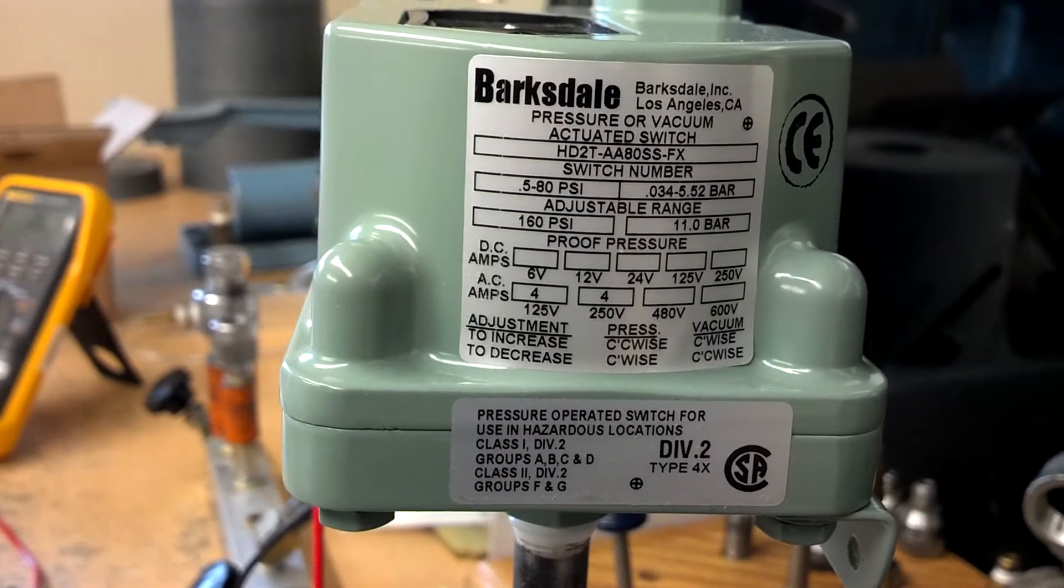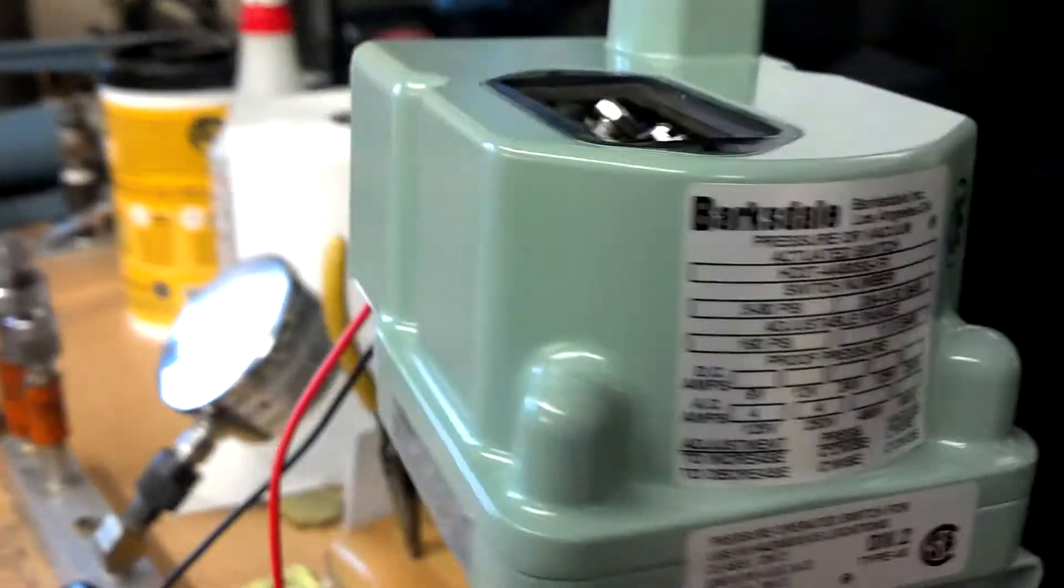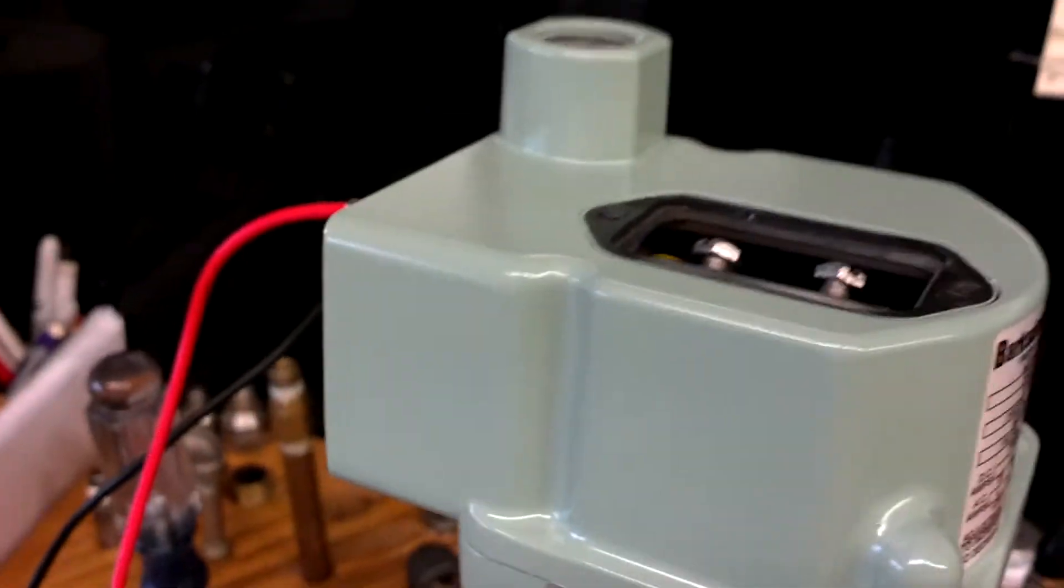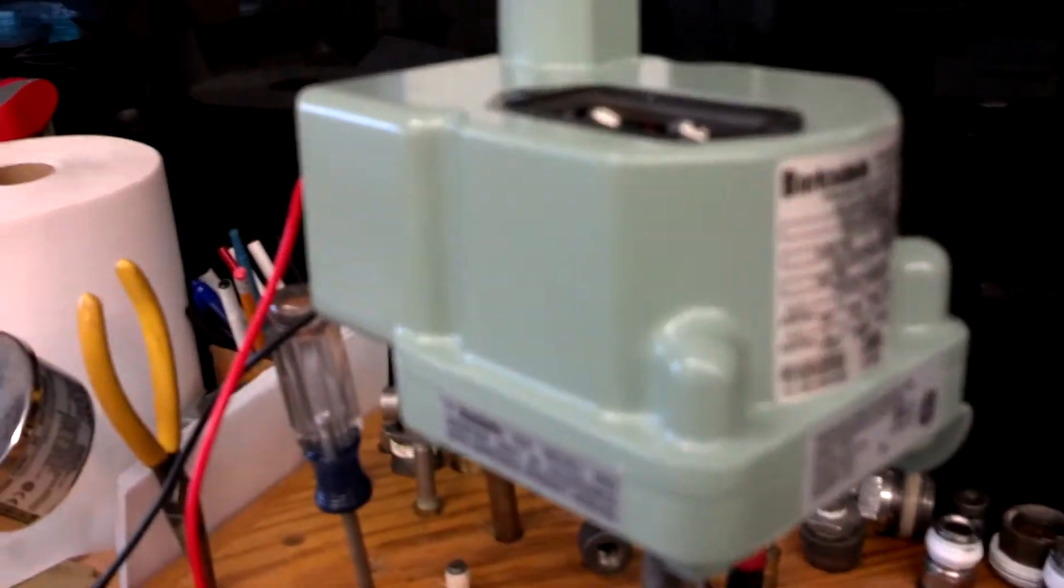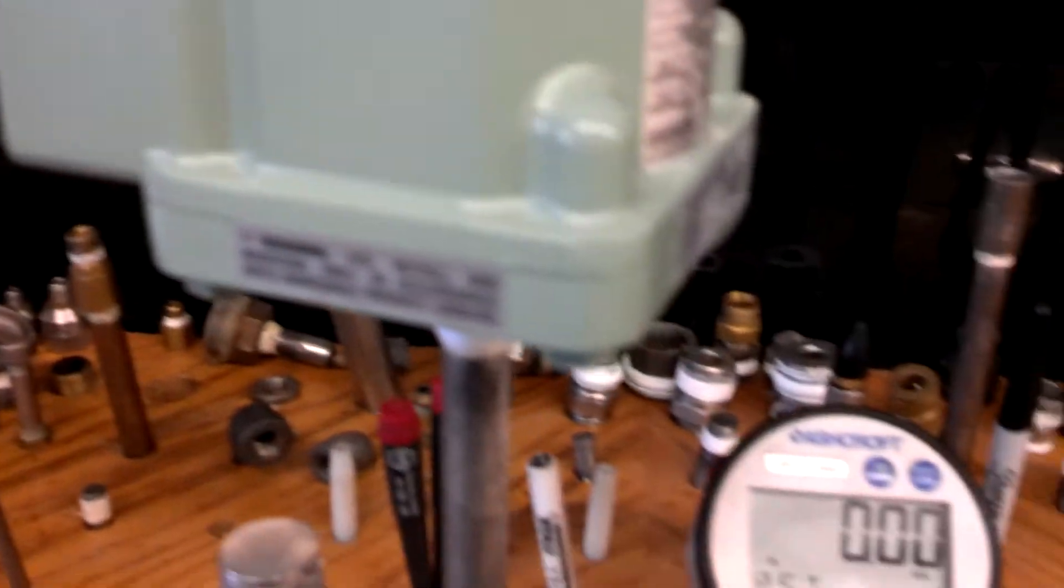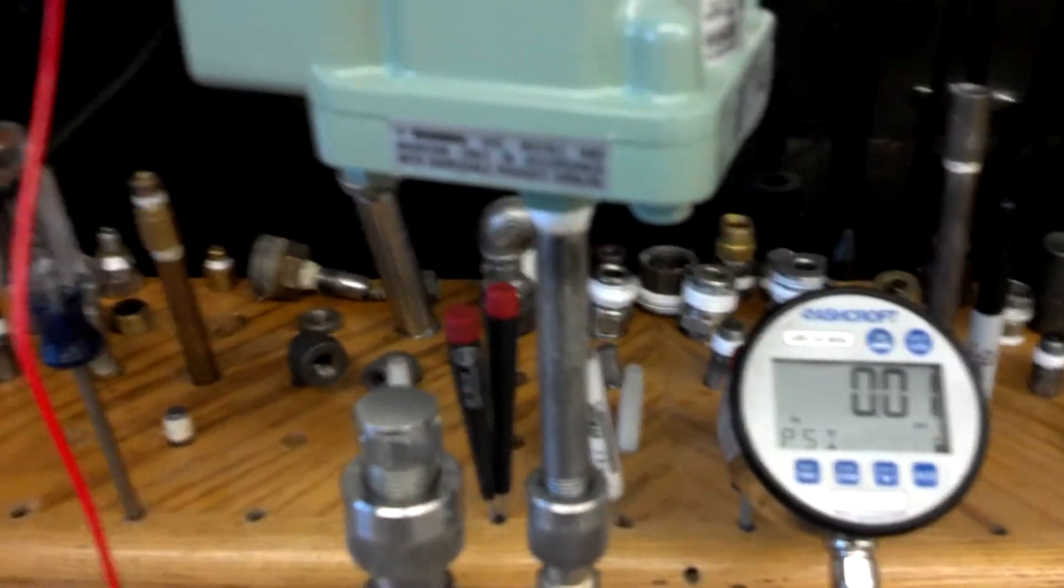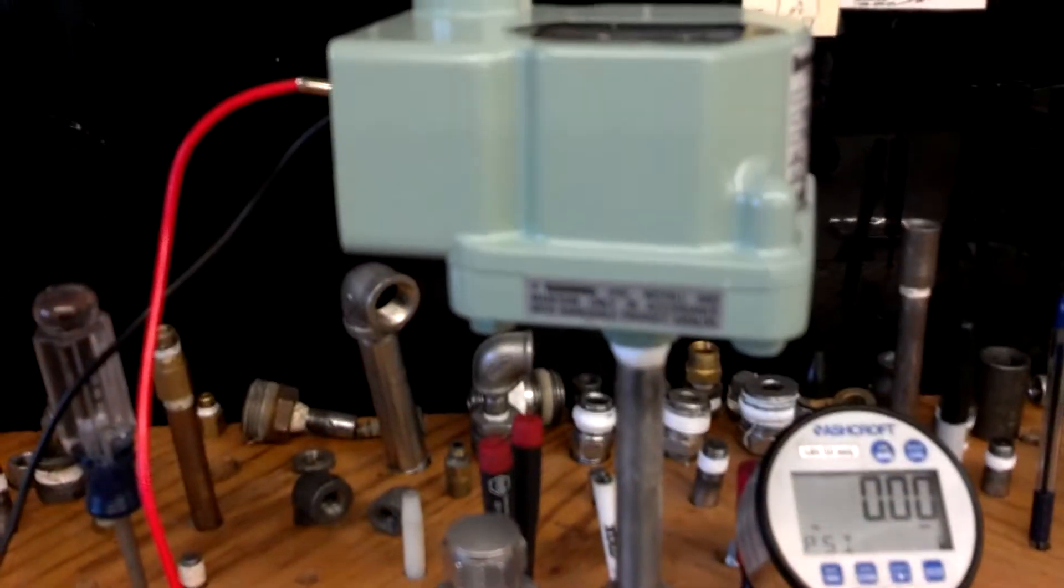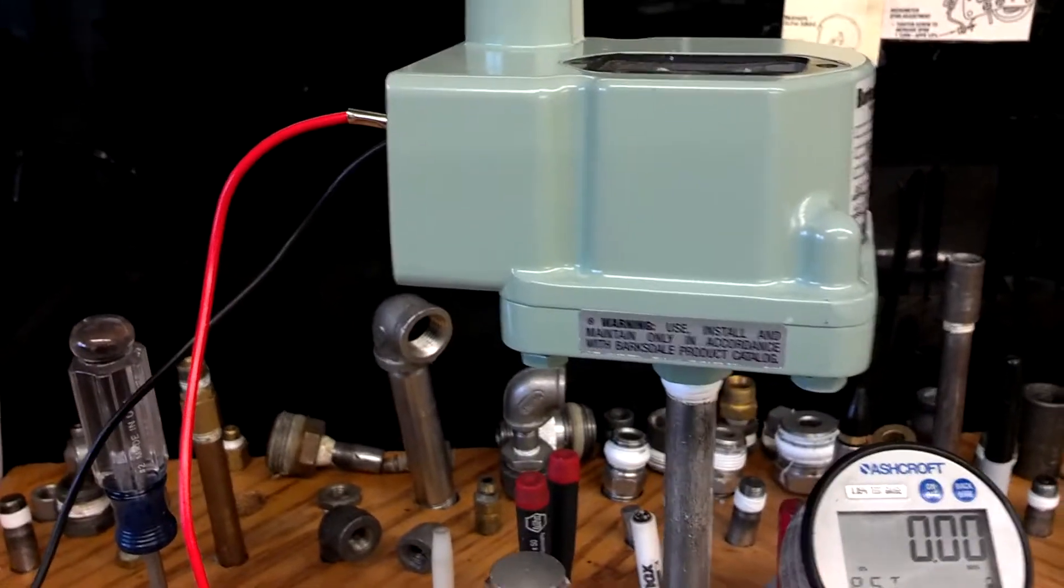Alright, got these Barksdale switches. Customer's calling for a set point of 15 PSI increasing. The approximate dead band Barksdale is claiming is 3.4 PSI. Currently it's set at about 16 PSI.